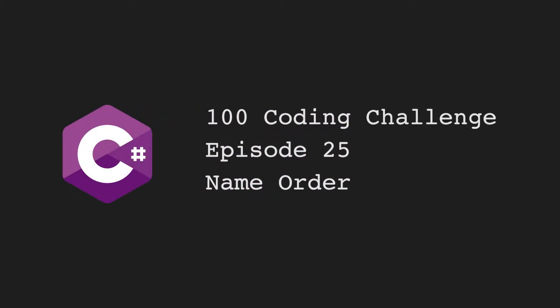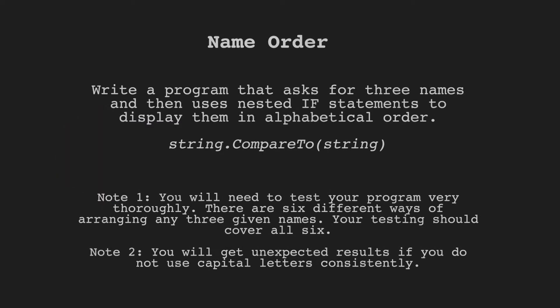Hello and welcome back to 100 coding challenges in C#. This is episode 25, called 'Name Order.' In this challenge, we're going to write a program that asks the user for three names and then uses nested if statements to display them in alphabetical order.